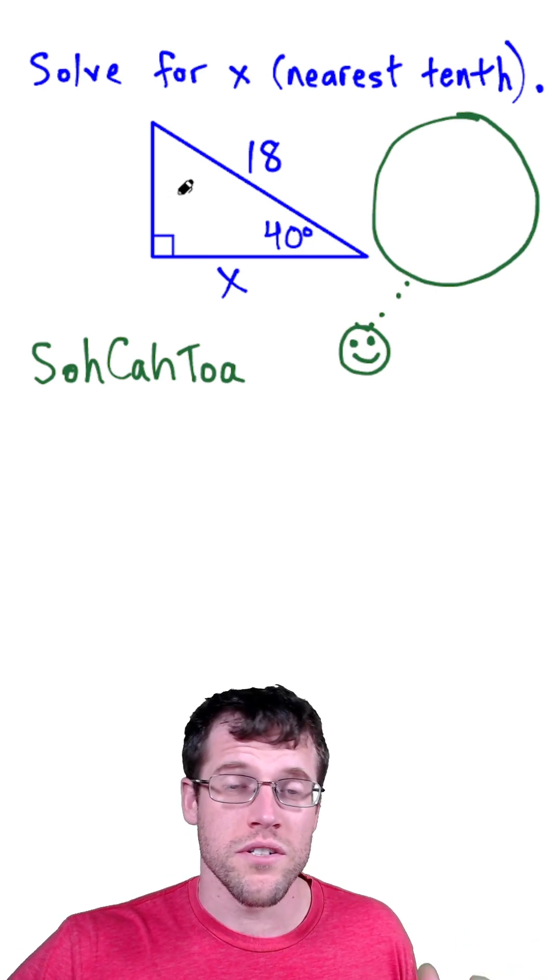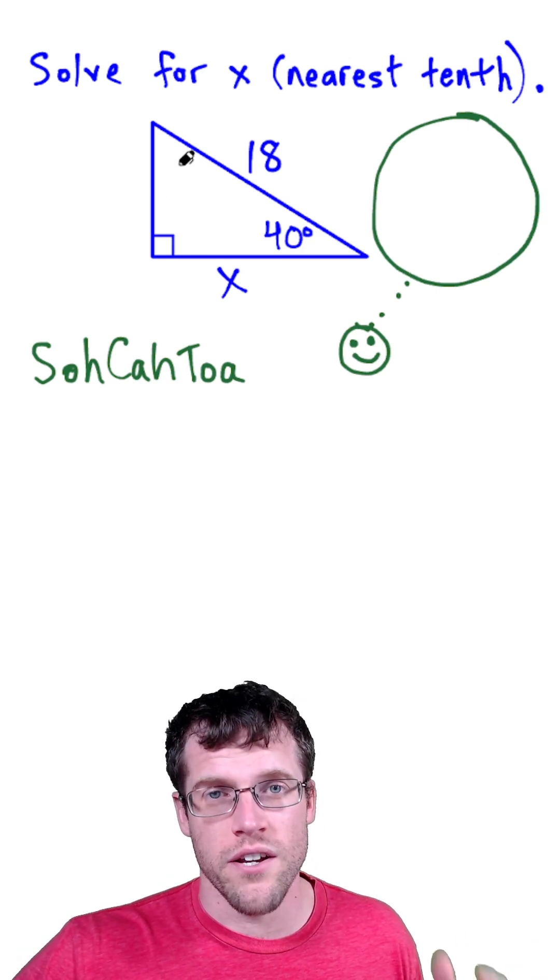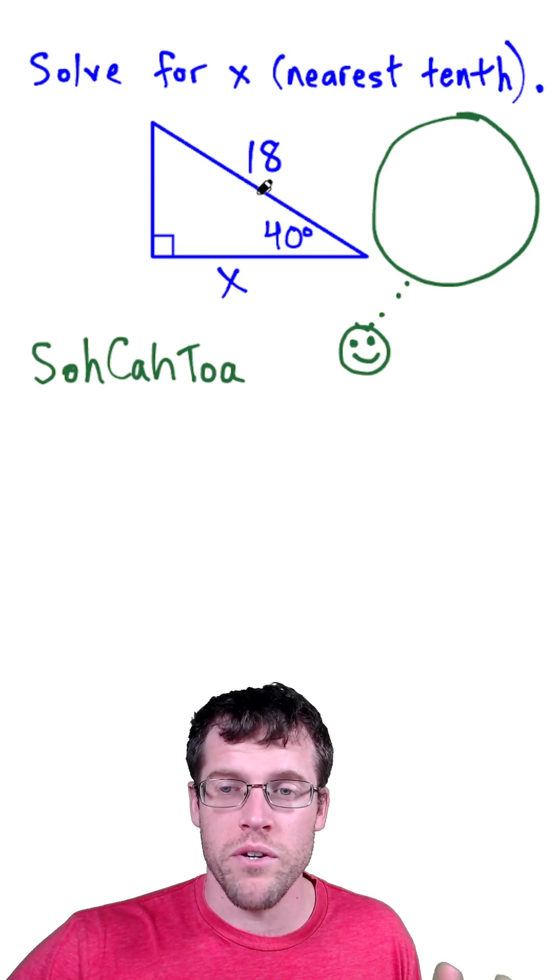Let's find the missing side of a right triangle using trig, and we're either going to use sine, cosine, or tangent. To choose the correct trig function, let's think about what we know so far.